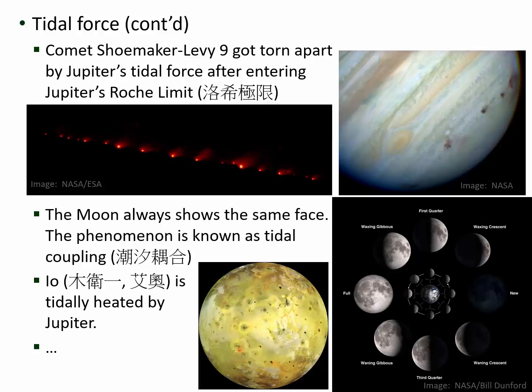If that were not the case, the tidal force exerted by the Earth on the Moon would continuously change the Moon's shape, which is not a stable situation. Tidal force is also important for heating up Io, a satellite of Jupiter. Because of the gravitational effect of other satellites of Jupiter, Io cannot settle into tidal coupling with Jupiter, so Jupiter continuously changes Io's shape. Because of internal friction, its interior is heated up — the yellow color you see on Io is actually sulfur, as the surface of Io is the most volcanically active surface, with lots of volcanoes.